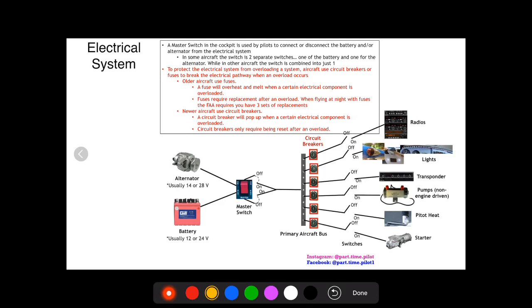If a fuse pops out, you have to replace the fuse, and the FAA requires that you have three sets of replacements, so you have three replacements for each fuse of each electrical component. So that's too much to do, so we just use circuit breakers because we can simply just pop them back in.